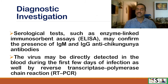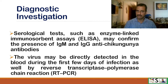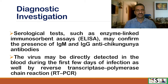Diagnostic investigations: Serological tests such as enzyme-linked immunosorbent assay (ELISA) may confirm the presence of IgM and IgG anti-Chikungunya antibodies. The virus may also be directly detected in the blood during the first few days of infection by the RT-PCR test.